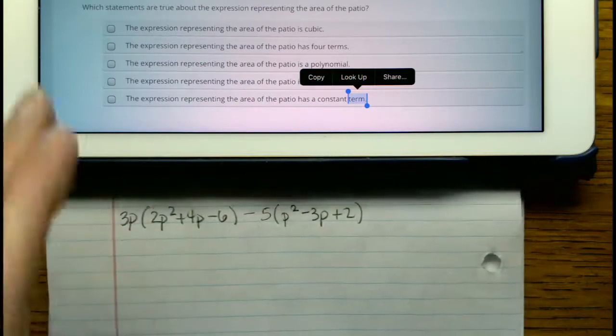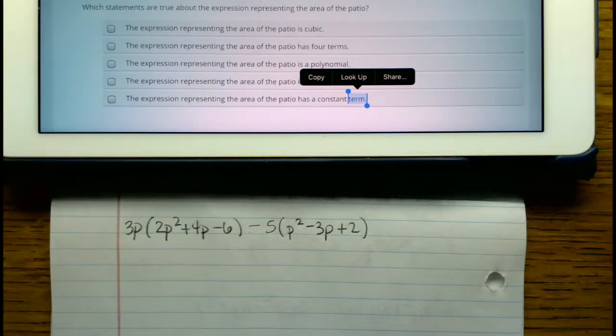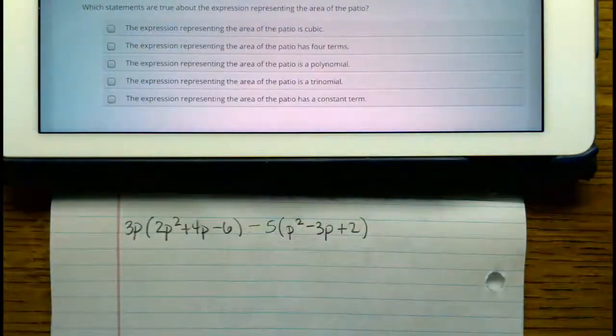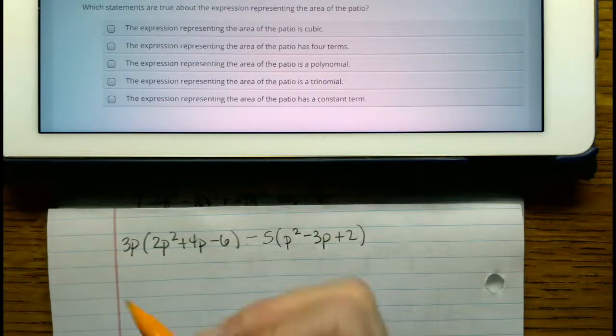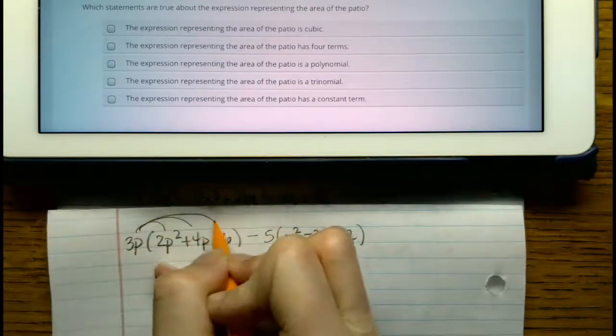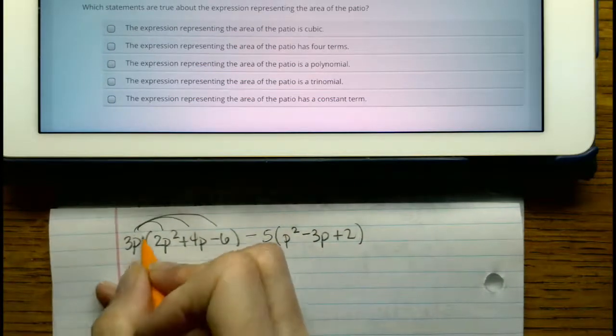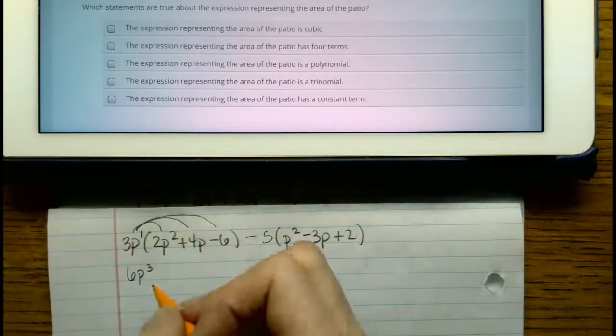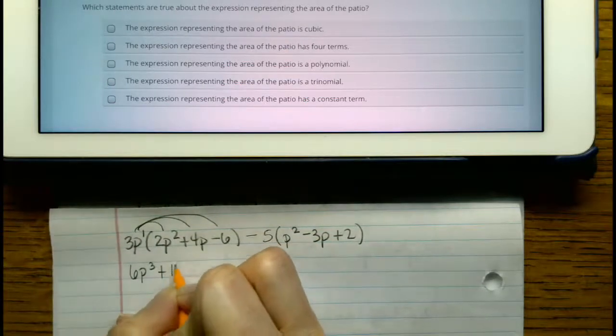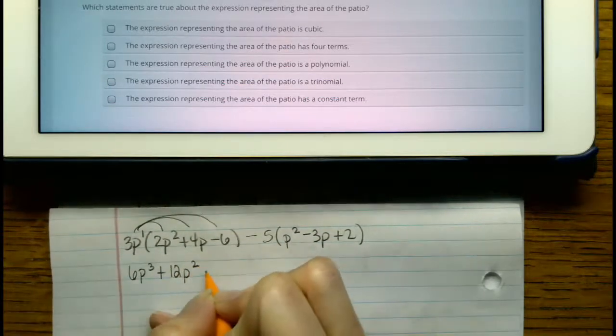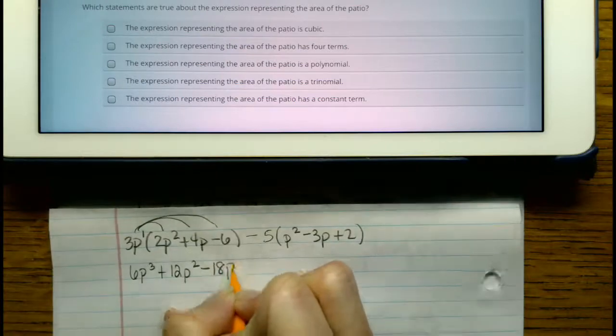So once we've got that, then we can figure out all of the possibilities here. So we can distribute, and we get 6p cubed, again remember add the exponent, plus 12p squared minus 18p.